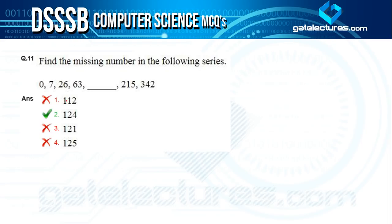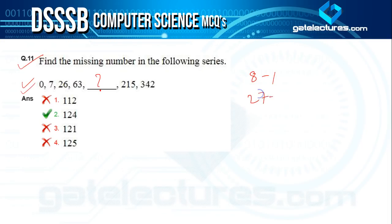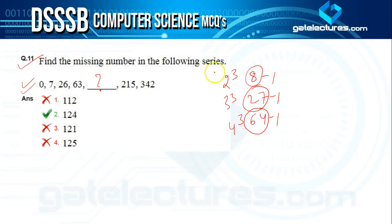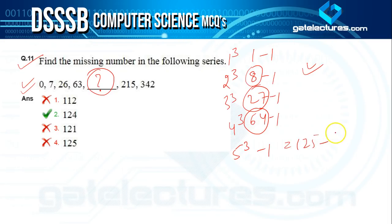Question eleven: find the missing number in the series 0, 7, 26, 63, ___. The pattern is: 1³−1=0, 2³−1=7, 3³−1=26, 4³−1=63. The next term is 5³−1 = 125−1 = 124. The correct answer is option two: 124.